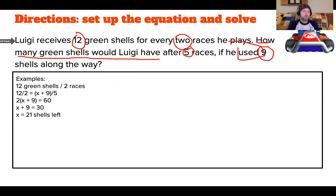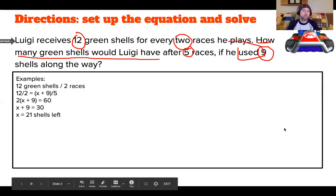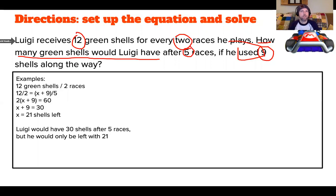Now, I wrote mine out, and I did mine right here in the box. This box that you see with the black around it, you can type right into that. You could also tell me what you did. Say, Luigi would have 30 shells after five races, but he would only be left with 21. So my correct answer is 21.